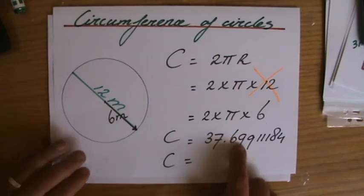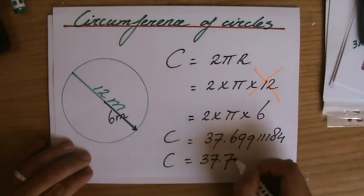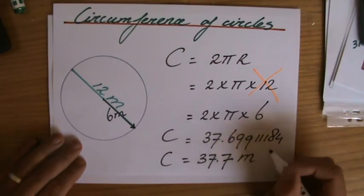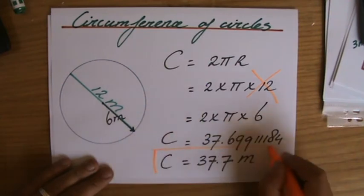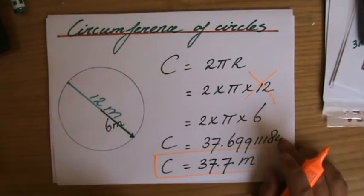It's higher than a five, so 37.7 indeed. What is the unit? Meters, absolutely. 37.7 meters. So if I would have a circle with a radius of 6 meters or a